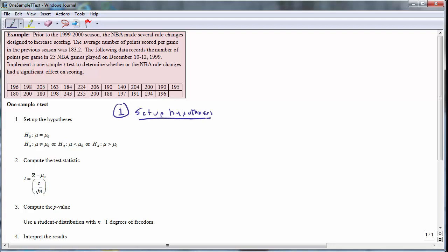In this problem, the null hypothesis is a statement that the rule changes made no difference and that this year's average score is the same as last year's. The null hypothesis is always represented using an equality or equal sign. So for the null hypothesis, I would say that the true population mean mu is equal to 183.2, and what this means is that the rule changes made no difference.